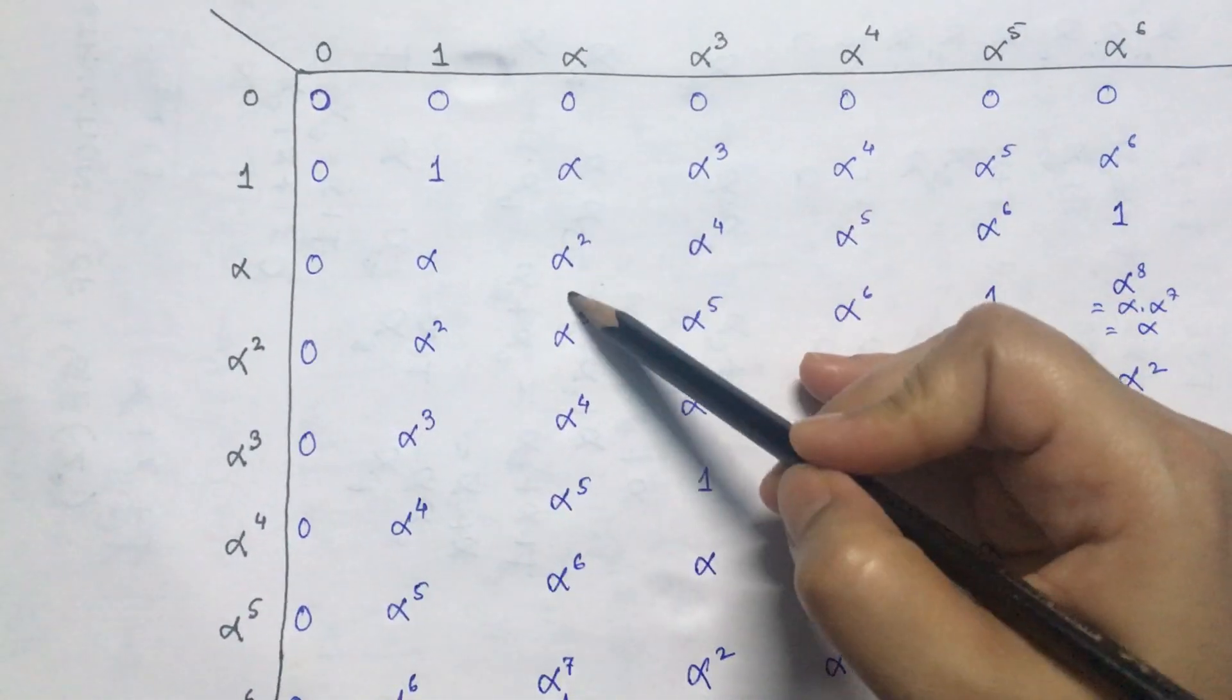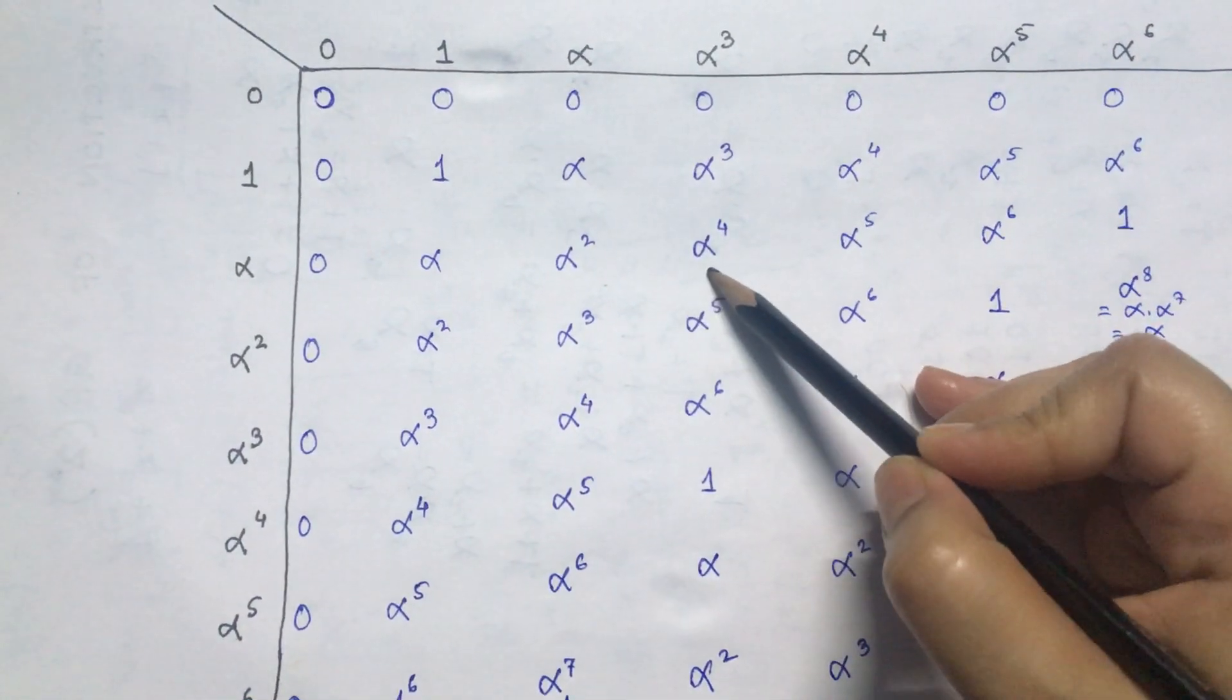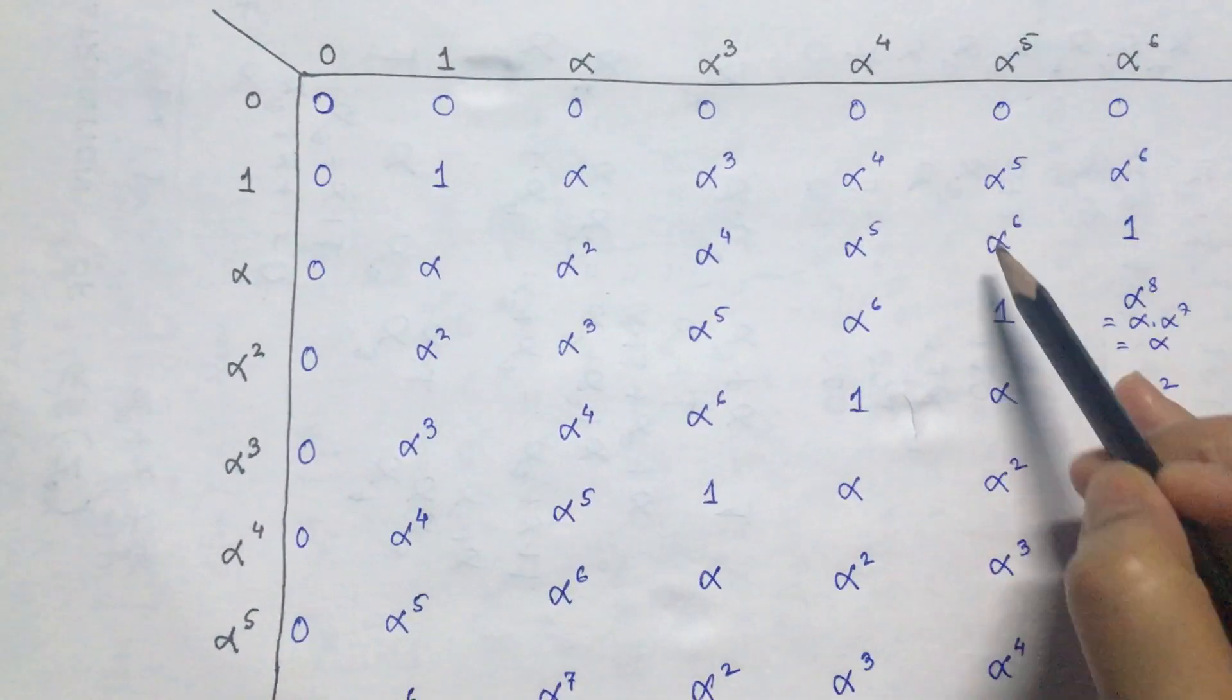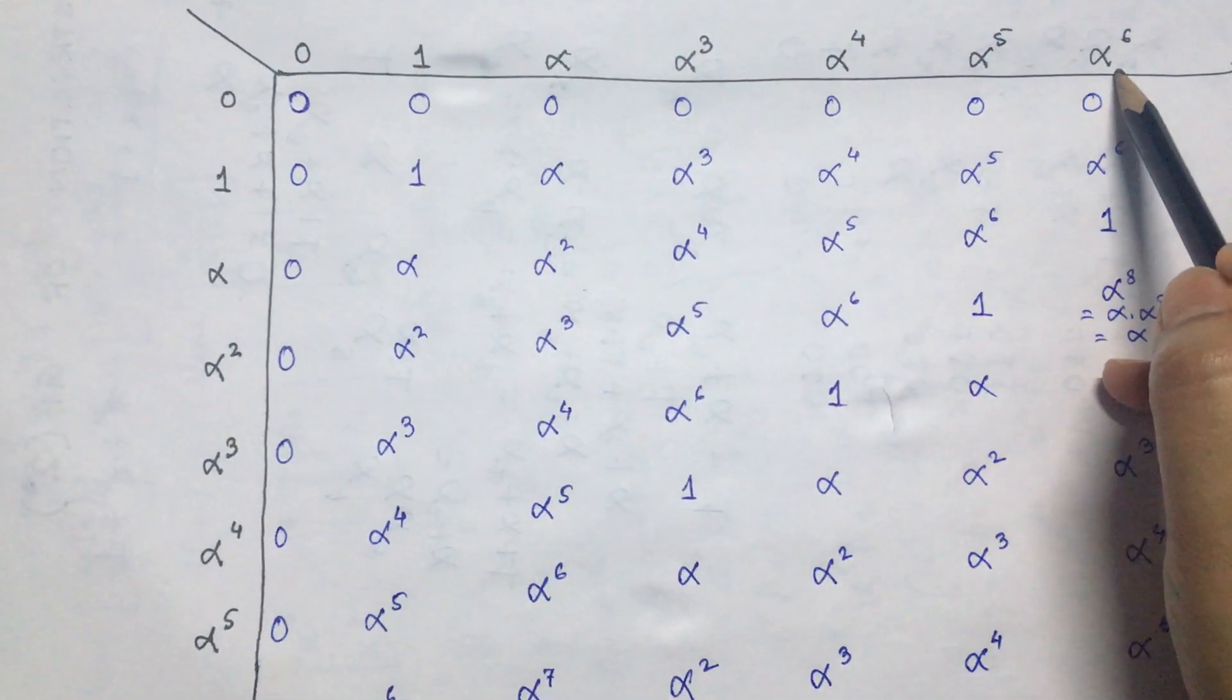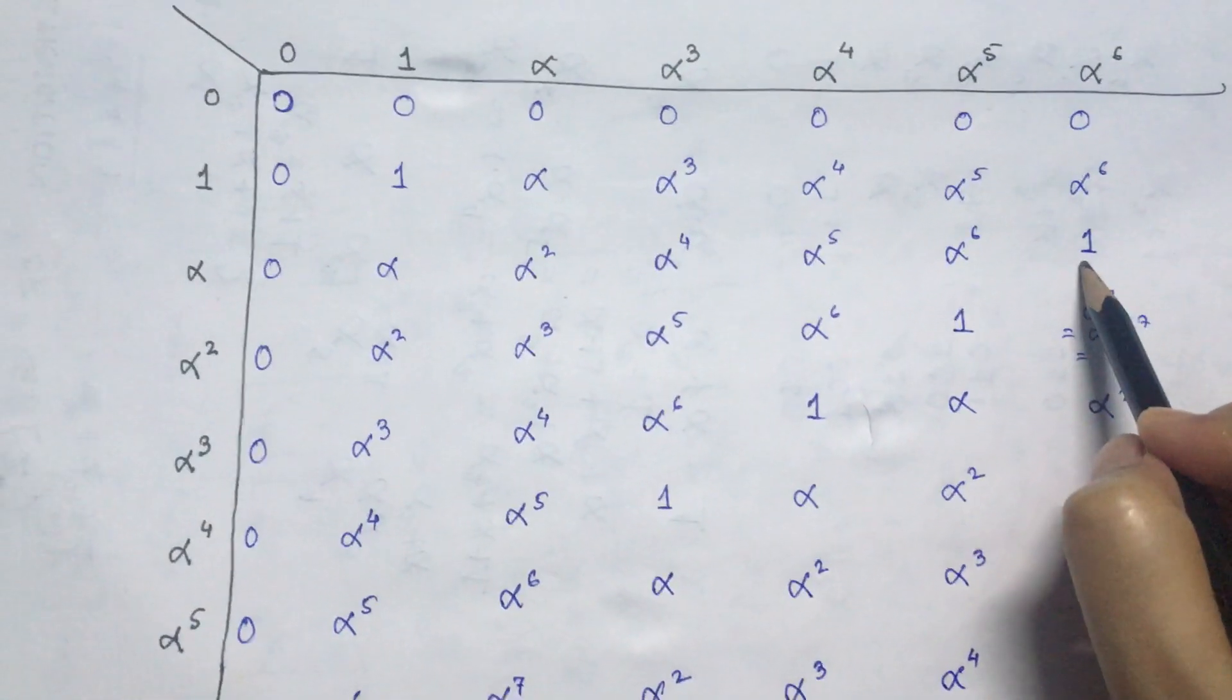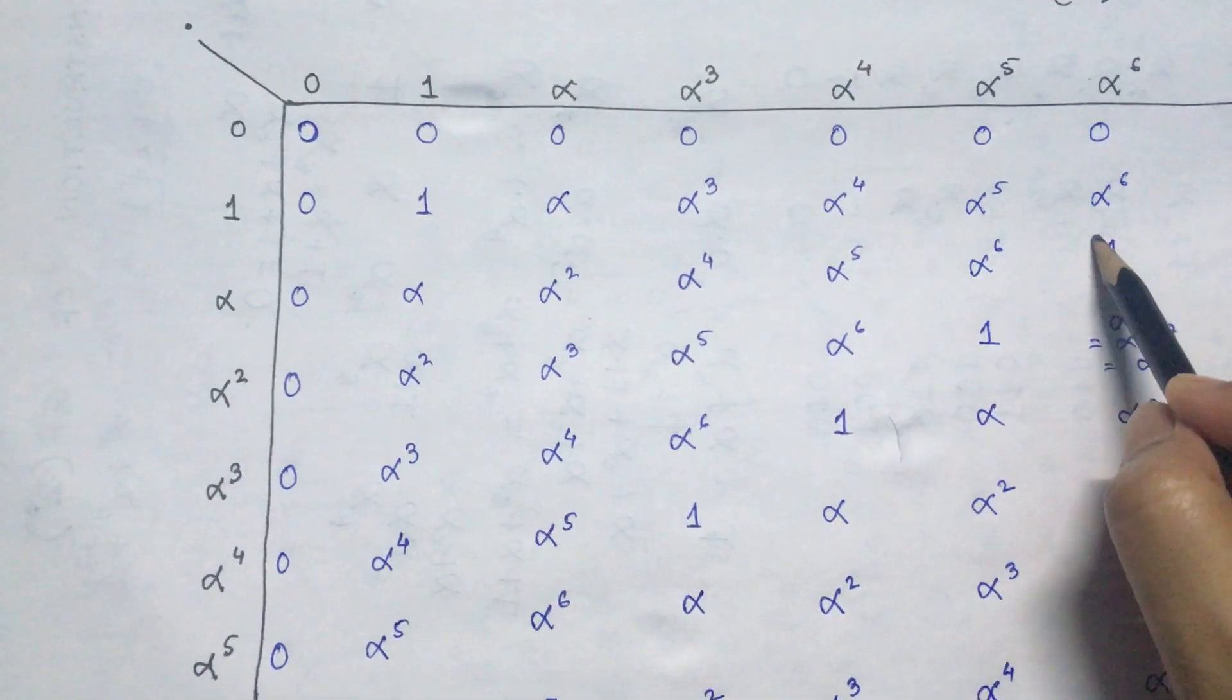Alpha into alpha, that is alpha square. Alpha into alpha cube, we have alpha to the power 4. Alpha into alpha to the power 4 is alpha to the power 5. Alpha into alpha to the power 5 is alpha to the power 6. Next, alpha into alpha to the power 6, that is alpha to the power 7. Alpha to the power 7 is 1 for GF2 to the power 3. So we have written 1 over here.